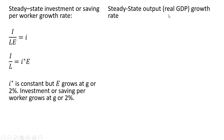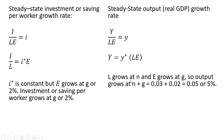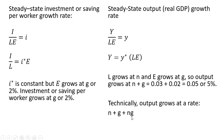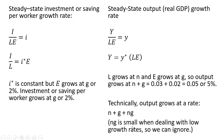Let's look at total output — real GDP, not per capita, not per worker, not per efficiency unit of labor, but total GDP. Total output Y equals the following: L grows at n, E grows at g, so total output or real GDP grows at n plus g, or 5%. Technically, output grows at n plus g plus n times g, but n times g is small when dealing with low growth rates, so textbooks generally ignore that term.